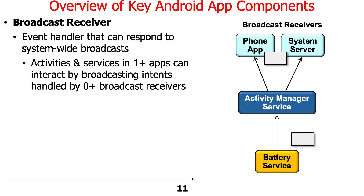A simple example: Android has a way of determining when the battery is getting low. A couple of different things might care about that. The end user in a phone call wants to be notified so they can end the call, plug in, or turn on battery optimization settings. The phone app might care about this, and so might the part of the system that tracks the power management policy — once the battery reaches a certain percentage, policies may kick in like dimming the screen, turning off certain services, shutting down stuff consuming memory, or killing background apps.